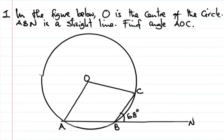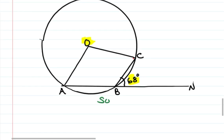In this video let's see the solution to this circle geometry problem. Question number one: in the figure below, O is the center of a circle. ABN is a straight line. We are asked to find angle AOC, given that angle CBN is 68 degrees.